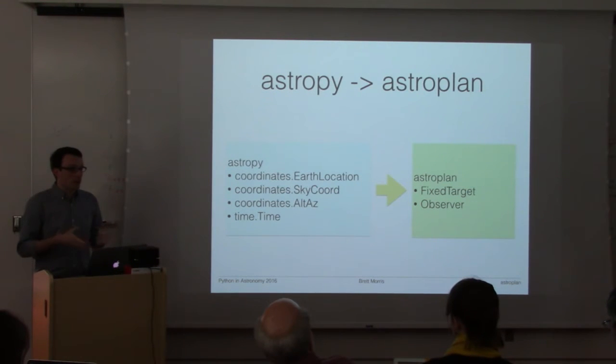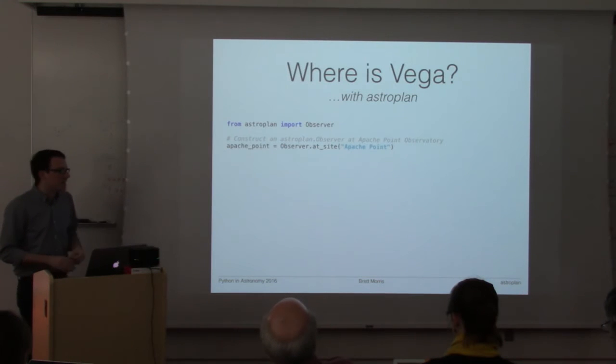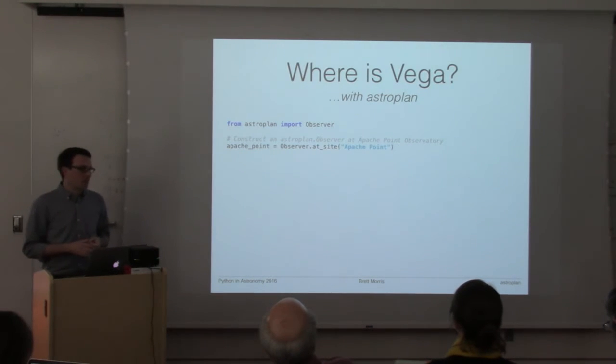AstroPlan just tries to provide a more direct way to do those kinds of calculations using a fixed target object which defines your objects in the sky with some metadata and an observer class which defines an earth location with some metadata, so you can put those things together to get really convenient functions.